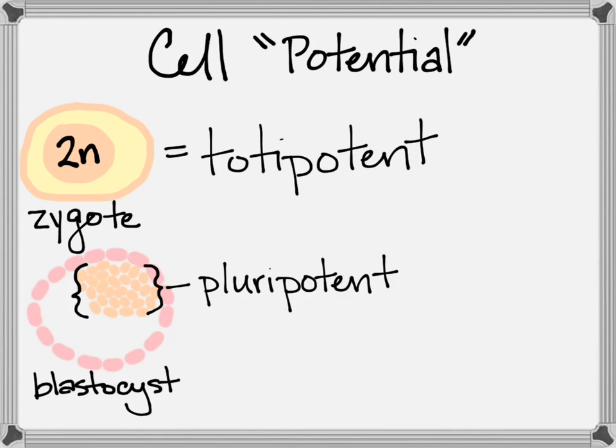The inner mass can still become all the cells in the body, but it still needs the outer mass, which is destined to actually become the placenta, to create a new organism.